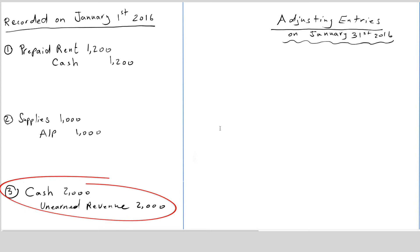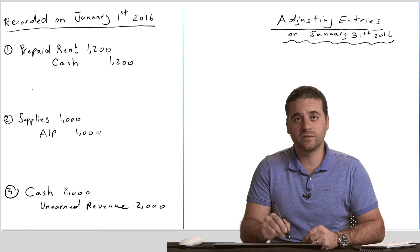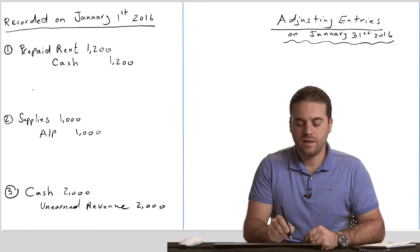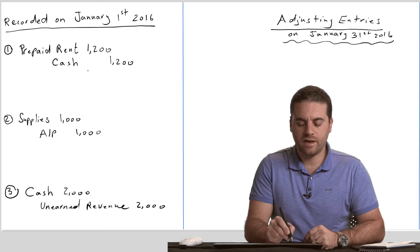The deferral means that we got the cash in advance or we paid the cash in advance, and the revenue or the expense has been deferred to the future. I'm going back to some of the transactions that we recorded in our previous videos for the first two chapters — those three journals in particular: prepaid rent, cash, supplies, and unearned revenue.